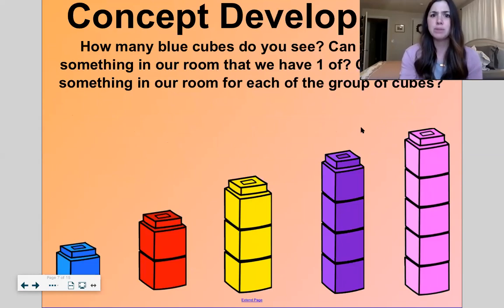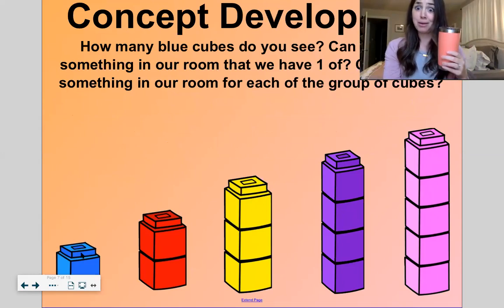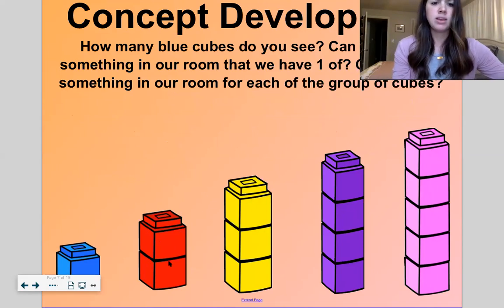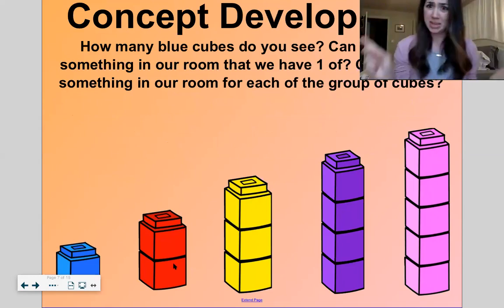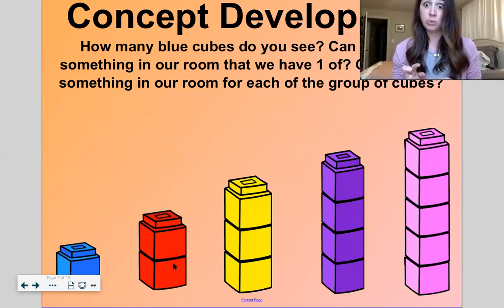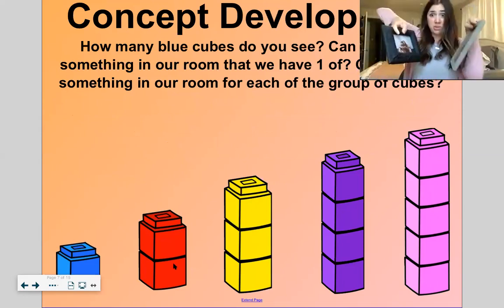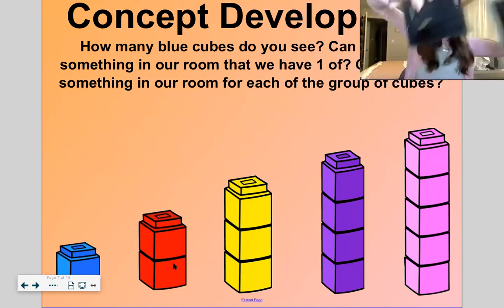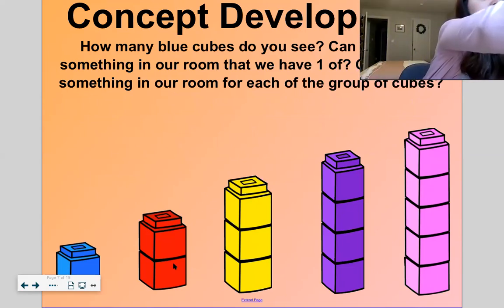Let's do some more of this on the next page. How many blue cubes do you see? One. Can you find something in your room that you have one of? Oh, right here on my desk. I have one coffee mug. Just one. How many red cubes are there? Two. Yes. Can you find something in your room, wherever you are in your home right now, do you have two of? I have two picture frames right here. Just two. What do you have two of?